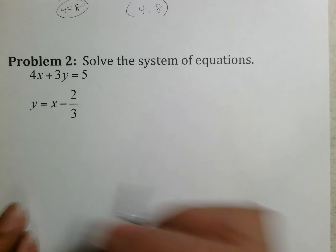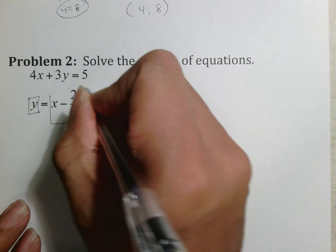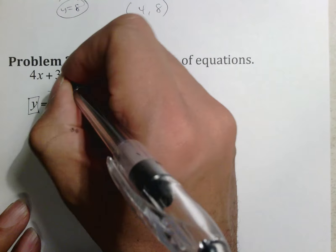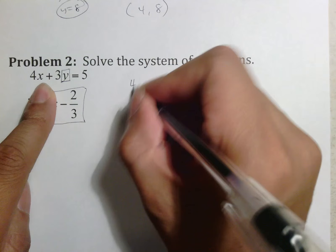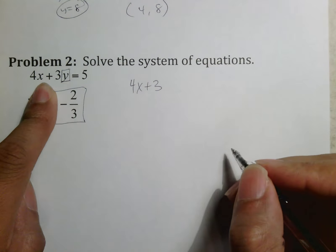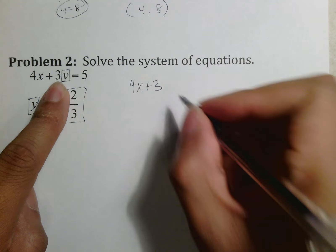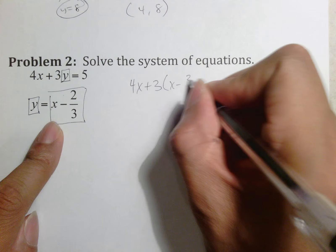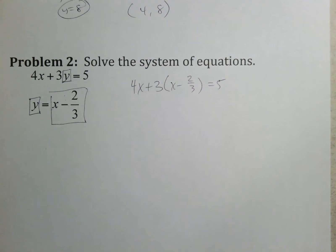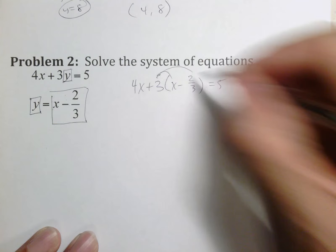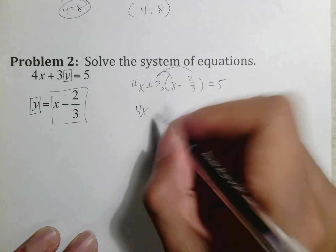Looking again at this, I notice that I have a variable by itself down here. This is what I'm going to put in this place. Because that's a y, I'm going to put it right there. So I write everything in front of the box, which is 4x plus 3, I swap y for x minus 2/3, and then after the box is equals 5.